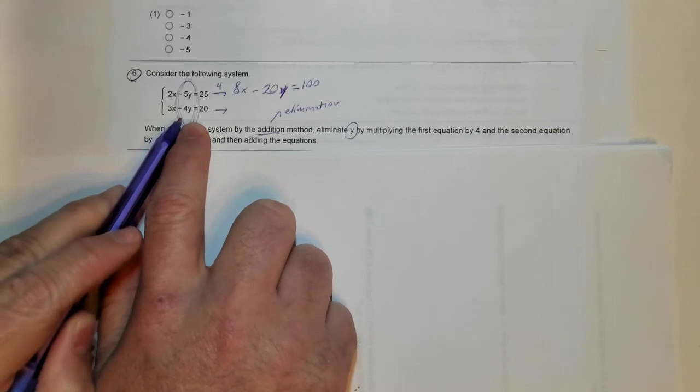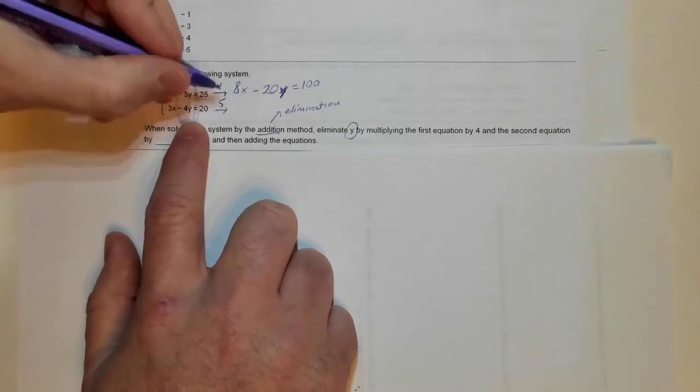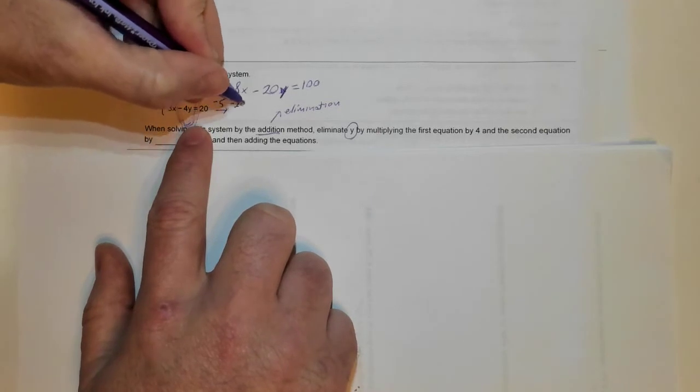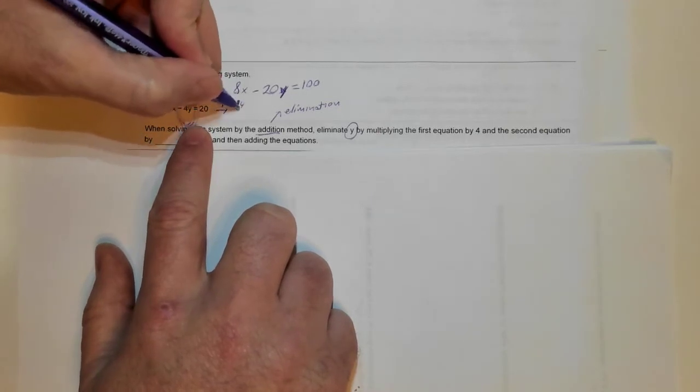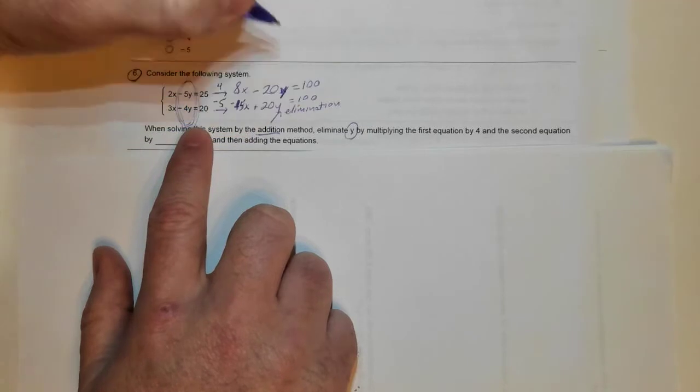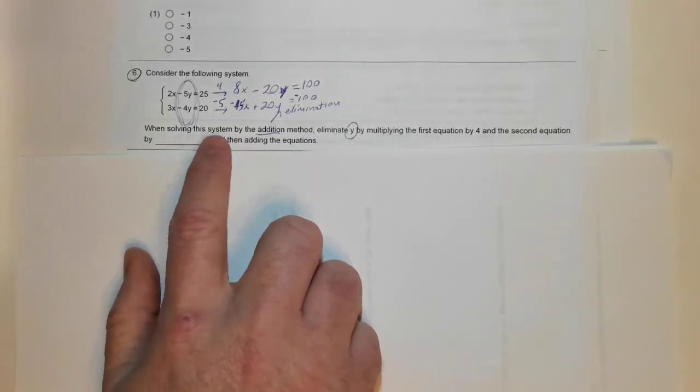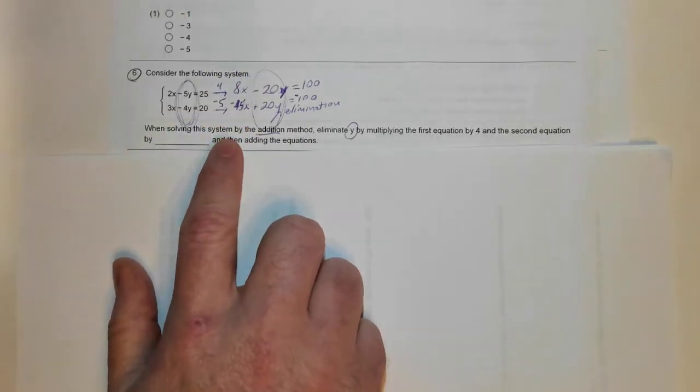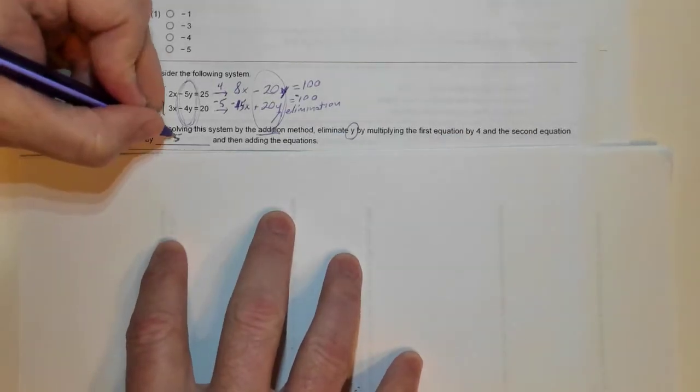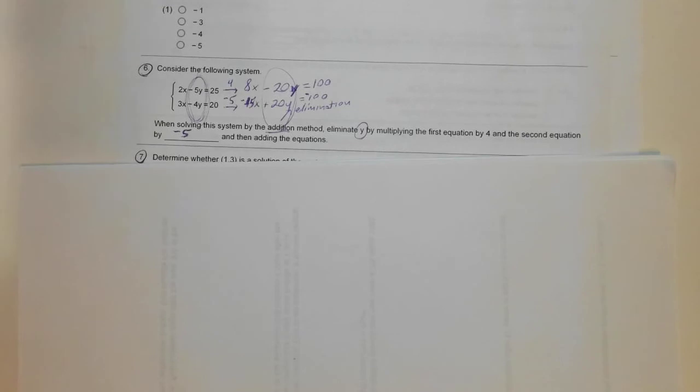I want this to be a positive 20Y. If I multiply this by 5, then I would still get a negative 20Y. So I'm going to multiply it by a negative 5. That would give me minus 15X plus 20Y equals minus 100. I don't care about solving this, I just wanted my Y's to cancel. So I would have to multiply the second equation by negative 5 so that when I add, the Y's they cancel. But again, I don't have to solve it, I just need to answer that question.